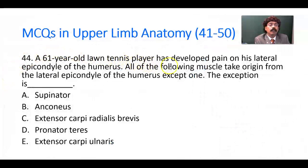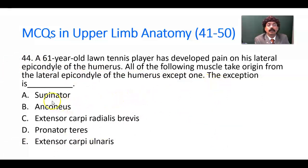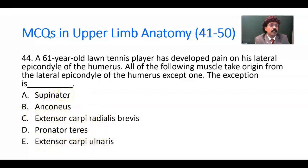Question number 44. A 61-year-old lawn tennis player has developed pain on his lateral epicondyle of the humerus. All of the following muscles take origin from the lateral epicondyle of the humerus except one. Options: supinator, extensor carpi radialis brevis, pronator teres, extensor carpi ulnaris. The lateral epicondyle has the common extensor muscle origin, so supinator, extensor carpi radialis brevis, and extensor carpi ulnaris all arise from it. The exception is pronator teres — it is a flexor muscle with origin from the medial epicondyle, not the lateral epicondyle.